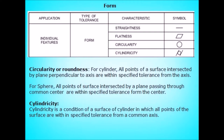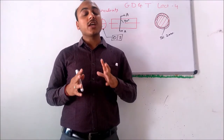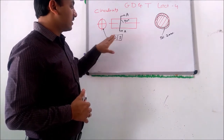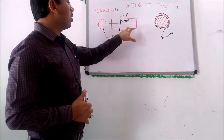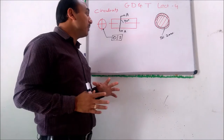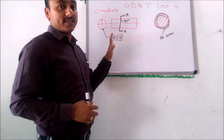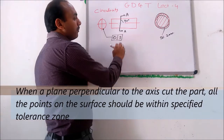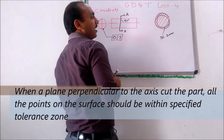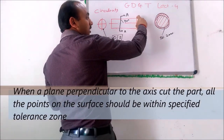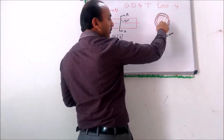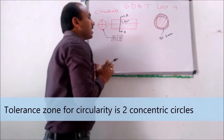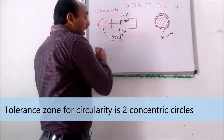Let us discuss form tolerances like circularity and cylindricity — how circularity is applied on the drawing and what it means. Circularity's symbol is a circle, and we apply it on the axis or we can put the arrow on the surface. It means that when a plane perpendicular to the axis cuts this cylinder, all the points on the surface must lie within the tolerance zone. The cylindrical surface points should not go below or outside this tolerance zone.